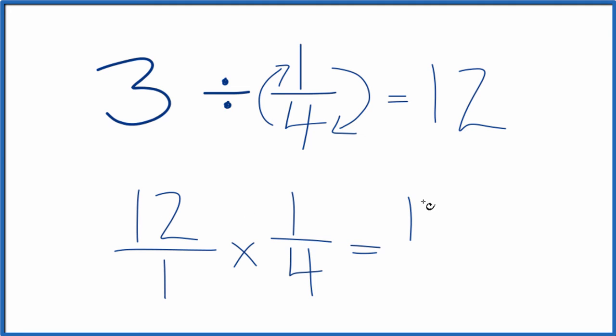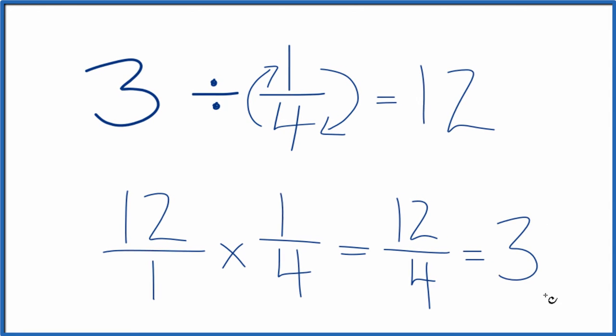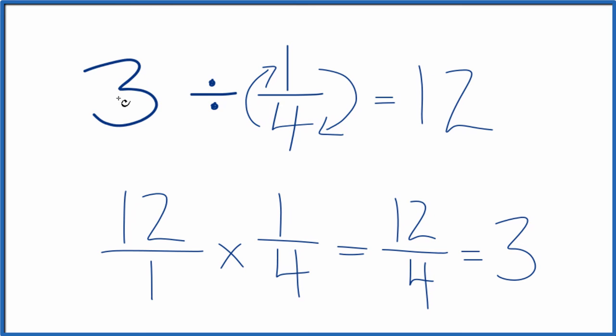12 times one is 12. And one times four is four. Four goes into 12 three times. So we get three, just like we had up here. So we correctly divided three by one-fourth to get 12.